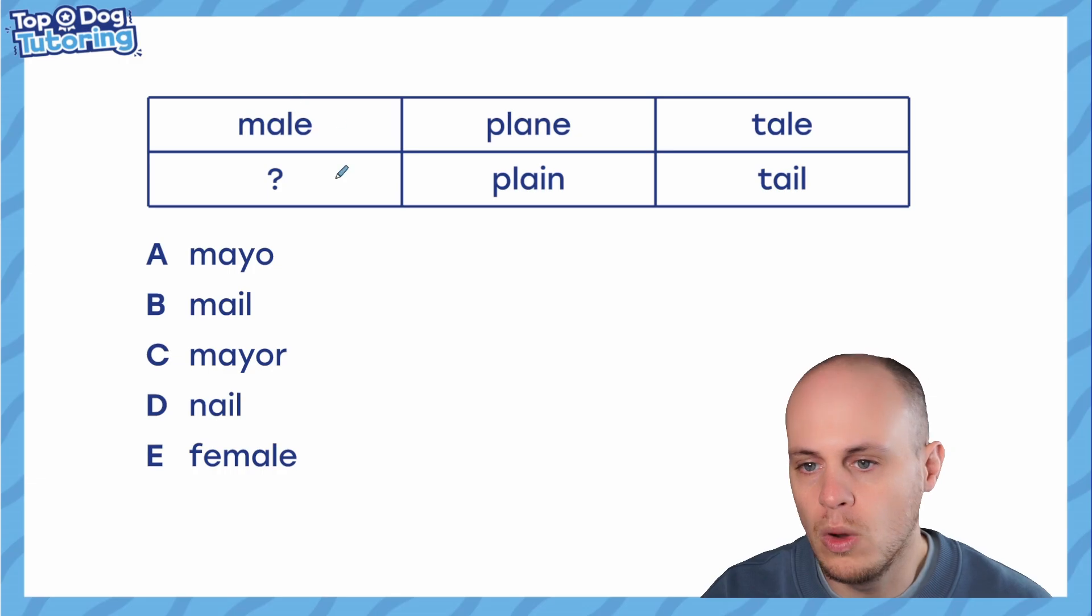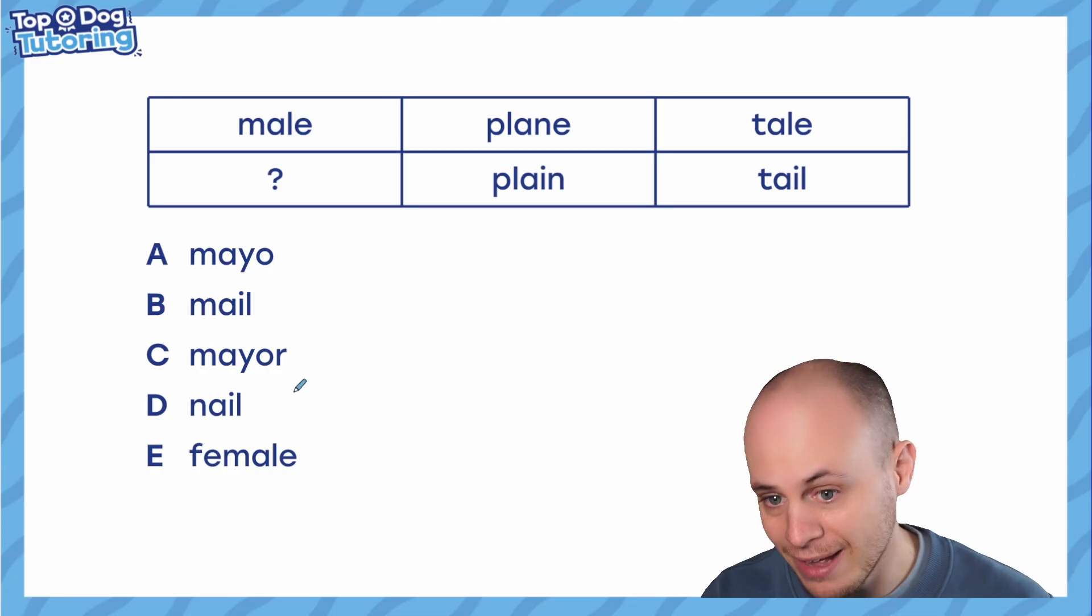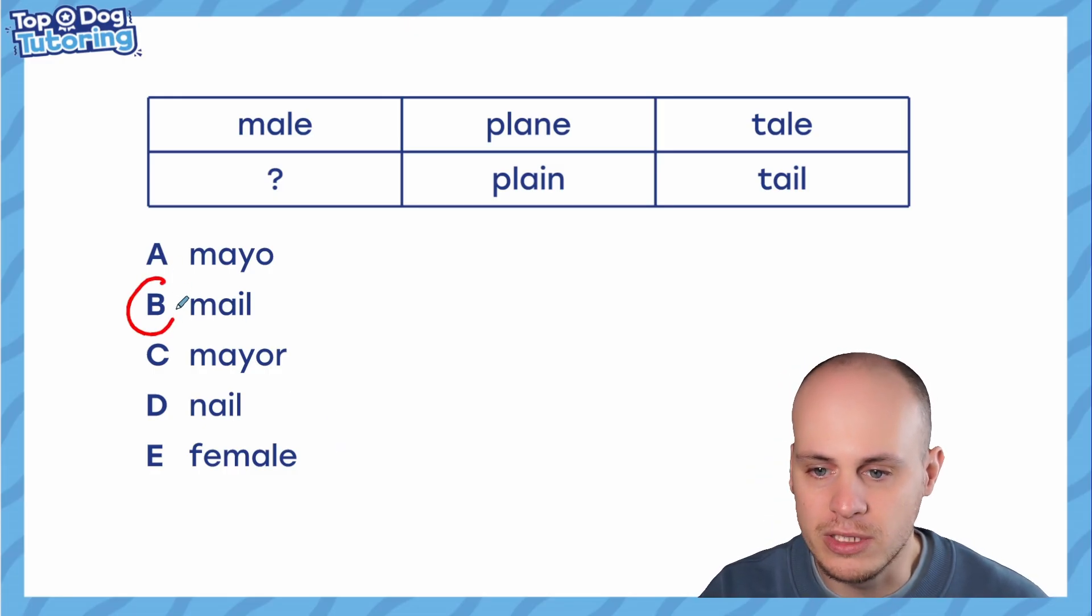So, of course, the answer to this one, what other word here says male, not mayo, or not mayor, or not nail, or female? They're all very close. But, of course, the only word that is actually exactly the same as the word male is B, mail, which also says male. It's just spelled differently. But this is not the only link. It's not always going to be as simple as just a couple of homophones. You know, that would be way too easy.